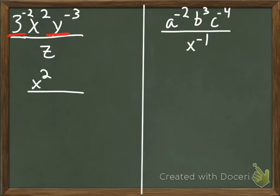Now let's start moving some things. So that 3 to the negative 2nd, if I move it from the numerator to the denominator, it becomes 3 squared. My y to the negative 3rd, I move it from the numerator to the denominator, it becomes y to the positive 3rd, or cubed.